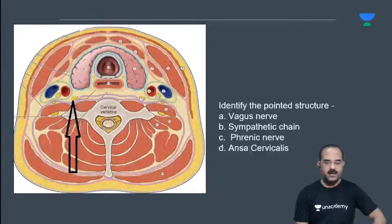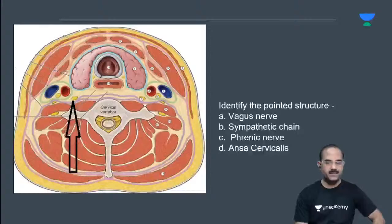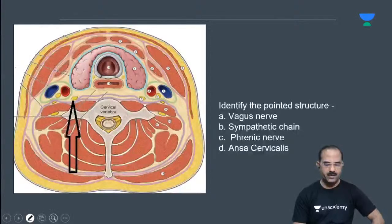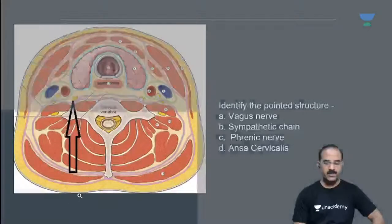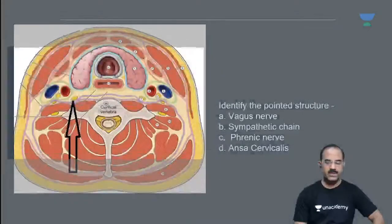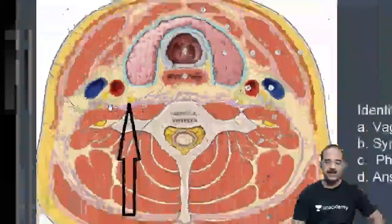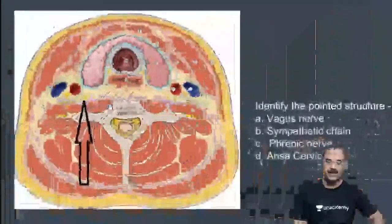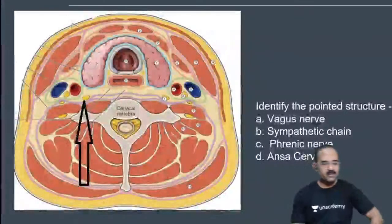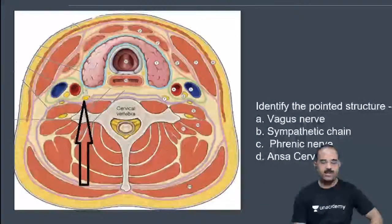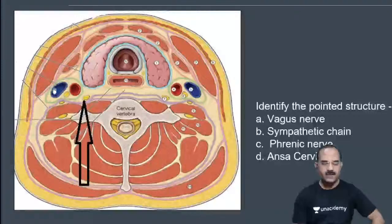What is this that I'm pointing? This is the carotid sheath, right? This is the carotid sheath. I'll just magnify this for you so it will be easy to understand. The answer is B. Very good, answer is B. This is the carotid sheath.